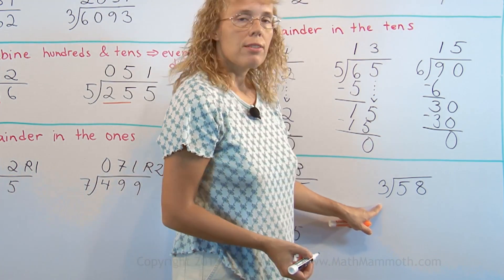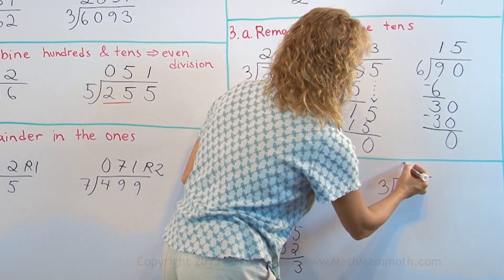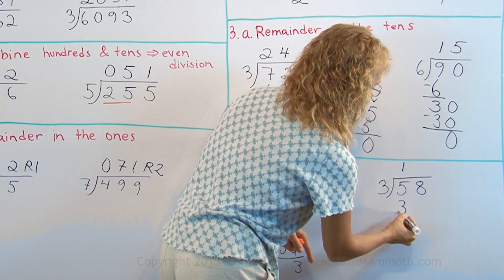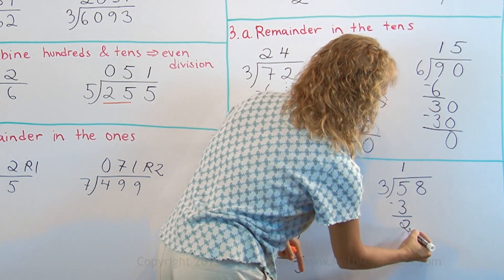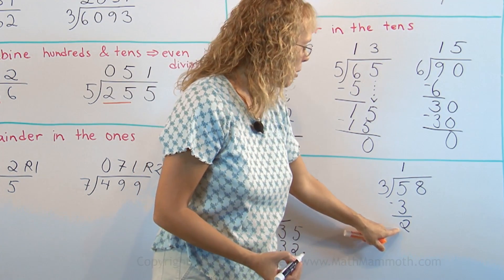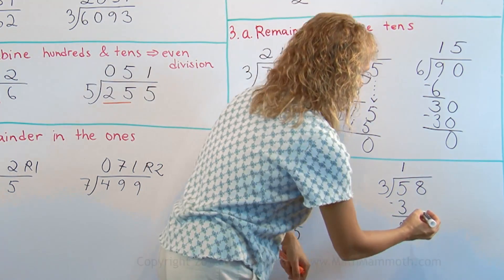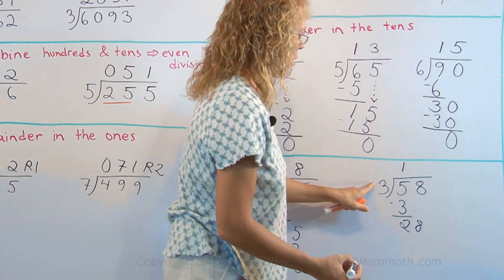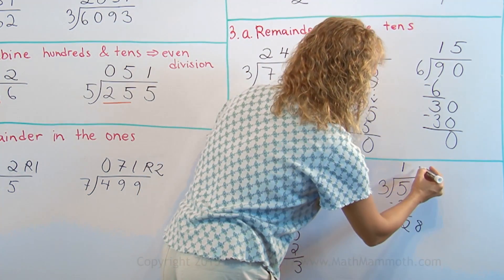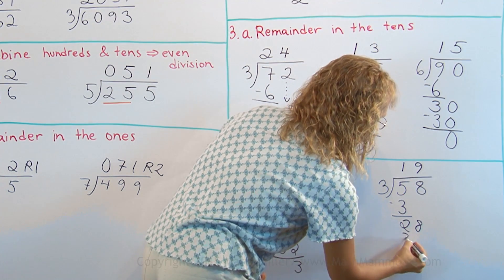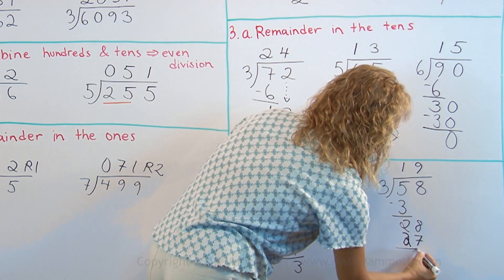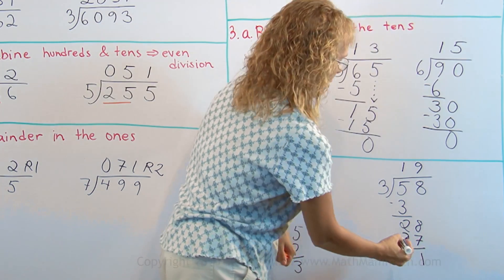Here, 3 goes into 5 one time. 1 times 3 — we multiply, then subtract. We have 2 tens as a remainder. We combine that with the 8 ones to get 28 ones. 3 goes into 28 nine times. 9 times 3 is 27. Subtract to find the remainder of 1.